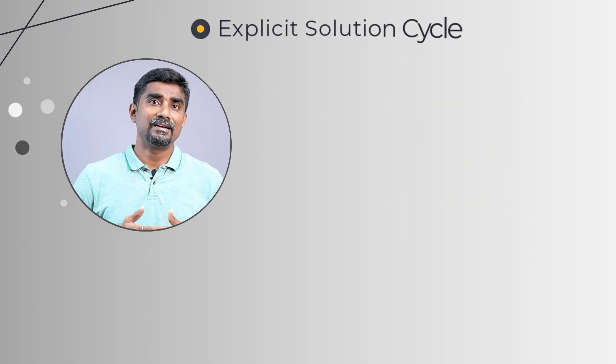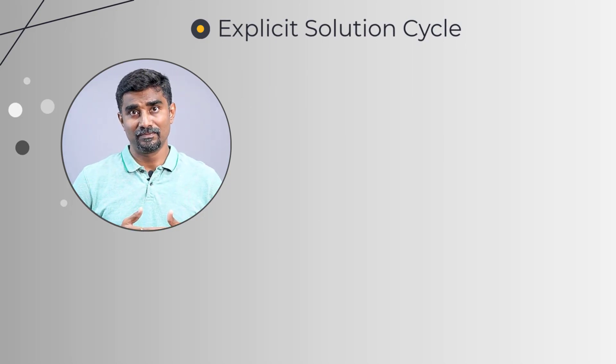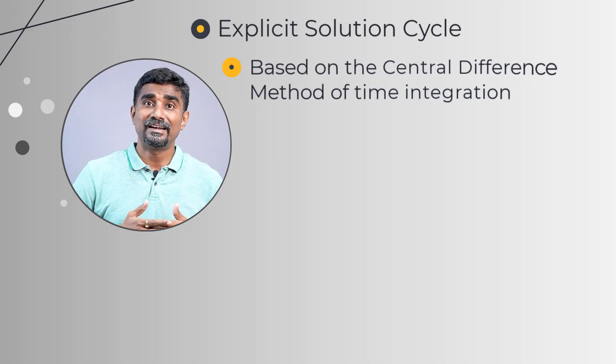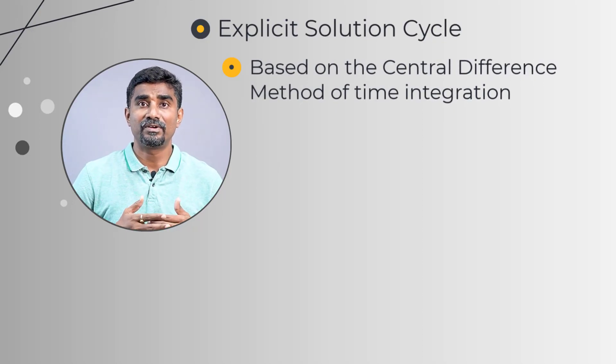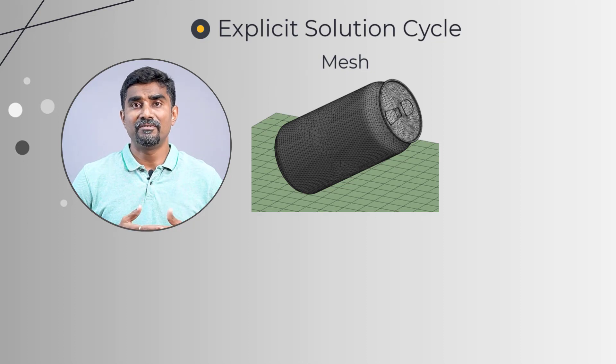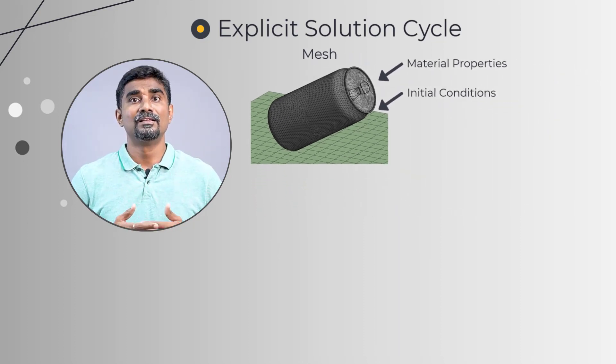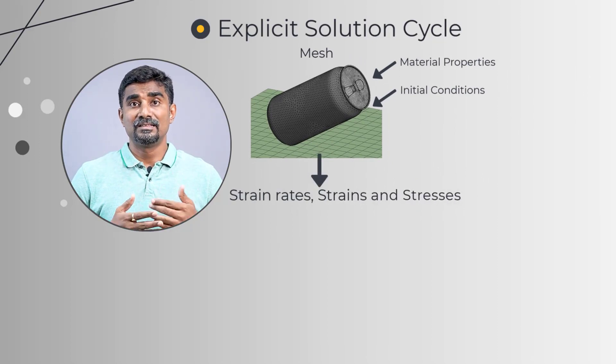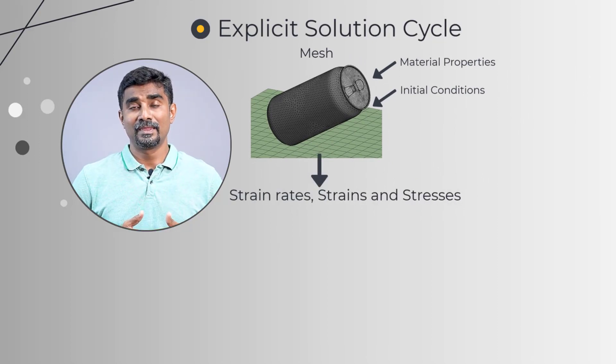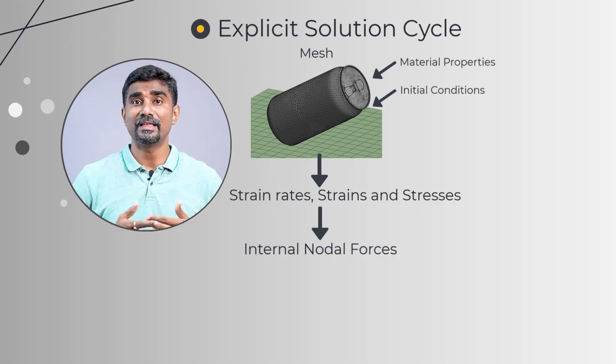Let us now understand the overall solution cycle for the explicit solution method. It is based on the central difference method of time integration. The solution starts with a mesh having assigned material properties and initial conditions. Then the strain rates, strains and stresses are calculated. This results in nodal forces for all nodes, including external nodes. Finally, the external nodal forces are computed from the boundary conditions, loads and constraints.